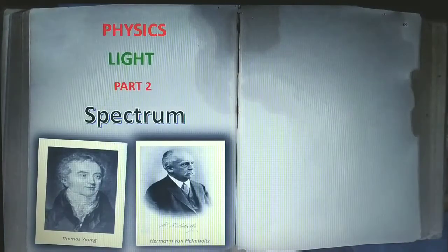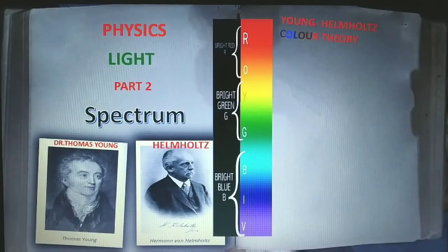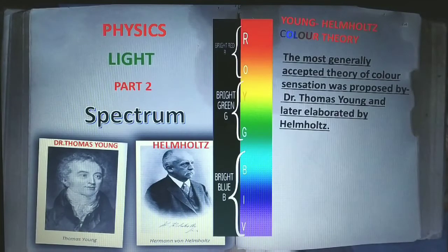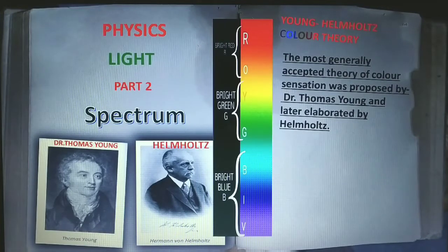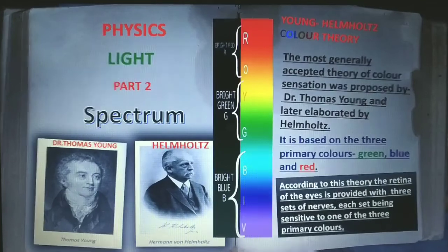Two important personalities in the physics of light spectrum: Dr. Thomas Young and Helmholtz. They gave the famous Young-Helmholtz color theory — the most generally accepted theory of color sensation. It was proposed by Dr. Thomas Young and later elaborated by Helmholtz. It is based on the three primary colors: green, blue, and red.